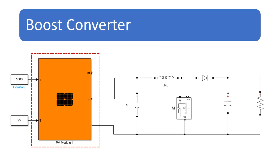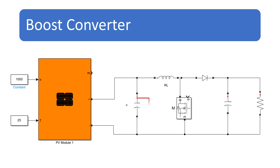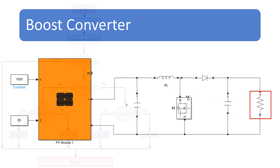To implement the perturb and observe method, a boost converter circuit with a solar PV module, input capacitance, inductor, power electronic switch, diode, output capacitance, and load resistance is required.